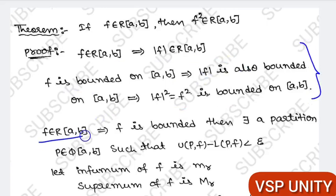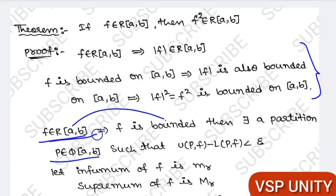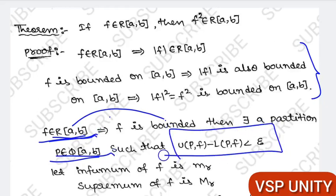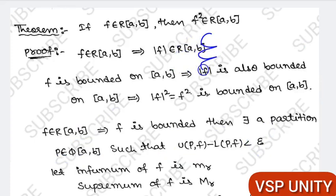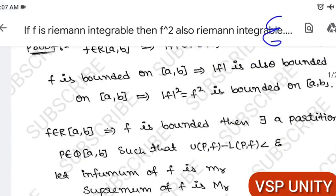f is Riemann integrable on [a, b] means f is bounded, so there exists a partition P belonging to Φ[a, b] such that U(P, f) − L(P, f) < ε. Note that epsilon represents a very small value — a very very small value.